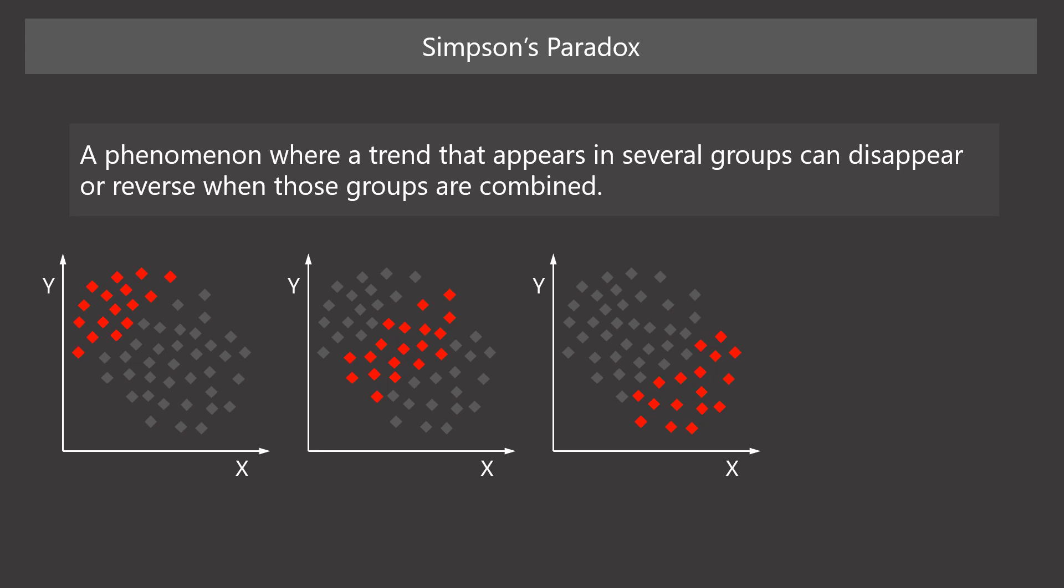In each plot, the red diamonds show a positive relationship where, as X increases, Y also increases. However, when we aggregate this data, an opposite trend appears. As we can see, as X increases, Y decreases.